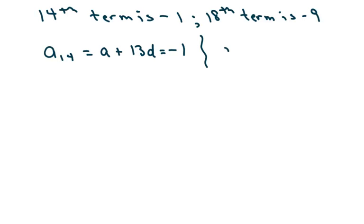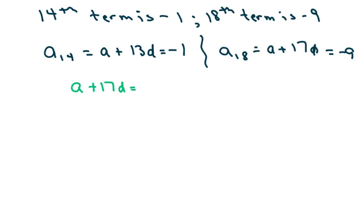And this one is going to be a sub 18 equals a plus 17d. I just subtracted 1 from the term. And this equals negative 9. So we get a plus 17d equals negative 9, and a plus 13d equals negative 1.